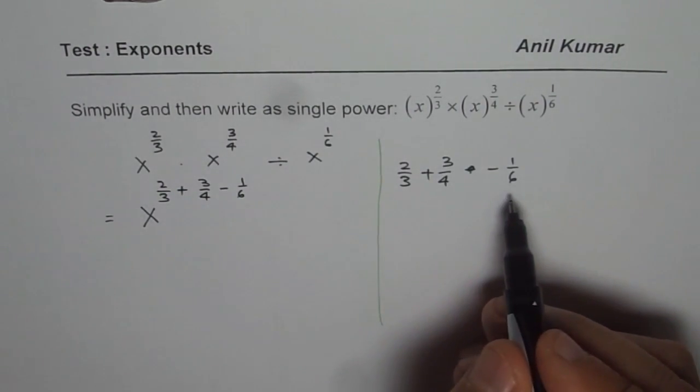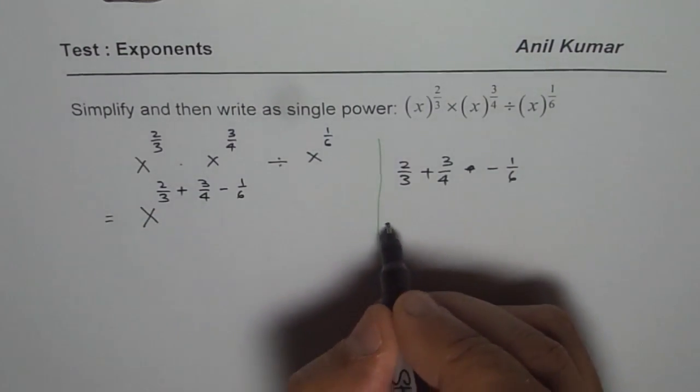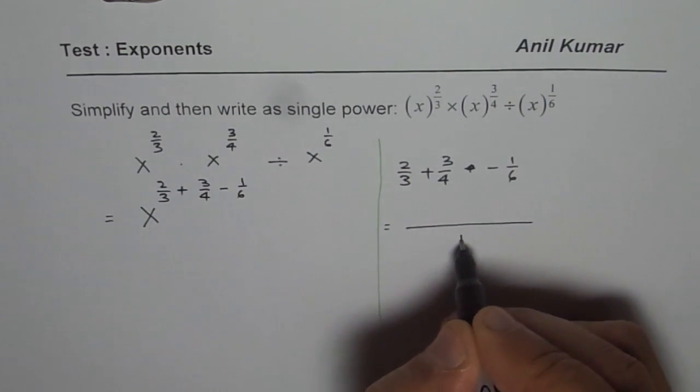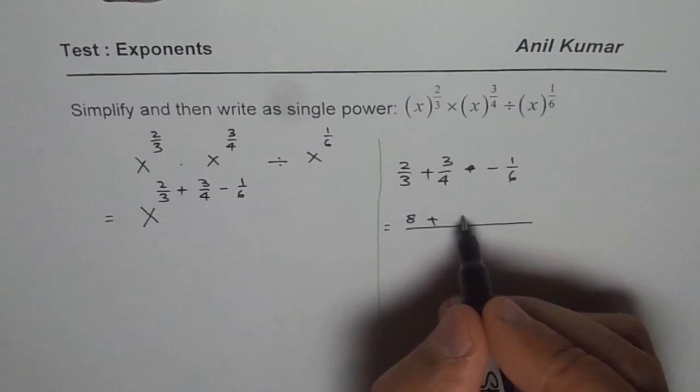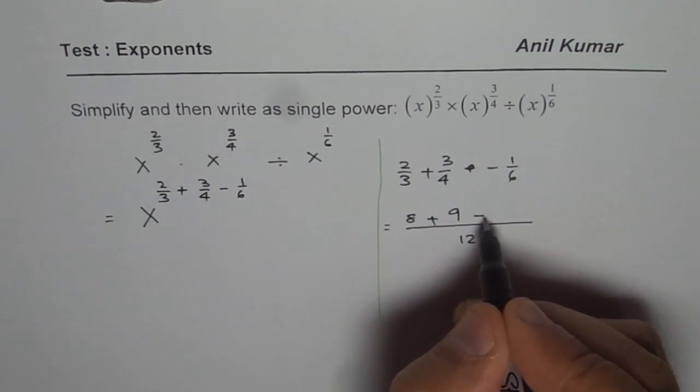So the common denominator here is 12. So we could write this with the common denominator of 12. To make this 12 I have to multiply by 4, so I get 8. I have to multiply this by 3, so 9 minus 2.